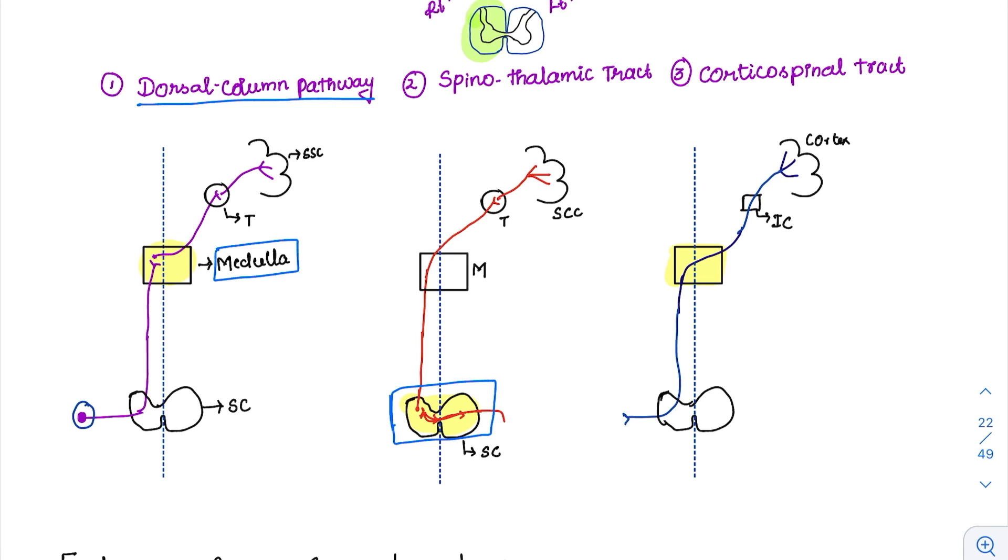Then coming to the descending tract, that is the corticospinal tract. I said where is the crossing over? The crossing over happens at the level of medulla.